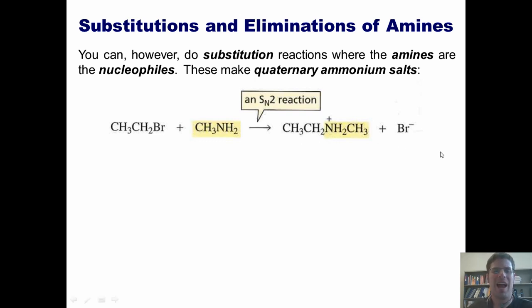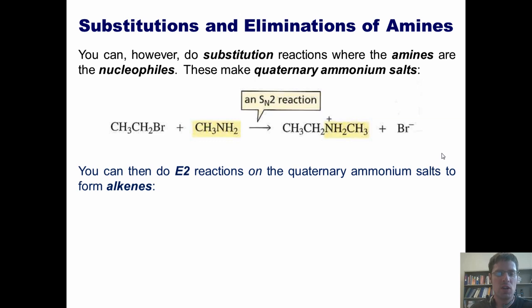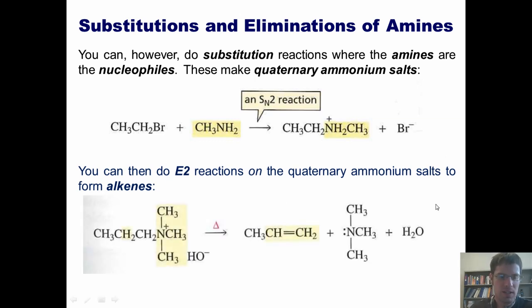Ammonium salts are actually useful because we can do E2 reactions on them to form alkenes. Here's an example. I've got an ammonium salt that has the nitrogen bonded to four different carbon groups. The counter ion is a hydroxide. If I heat this up, the hydroxide will grab a proton off of this carbon, pump the electrons down here to form a carbon-carbon double bond at this point, and then pump these two electrons into the nitrogen to neutralize its charge, forming an alkene. Thus, this is an additional way to make alkenes by going through a quaternary ammonium salt.